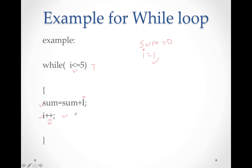The while loop works the same way as the for loop — just the contents are placed differently. One content (initialization) is outside the while loop, the condition is in the while bracket, and the increment or decrement is inside the block. If you can do a program in one loop, the rest of the loops will follow the same pattern. The content of while, do-while, and for loop is all the same.